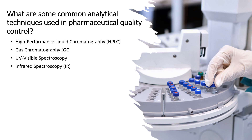Next is Infrared (IR) Spectroscopy, utilized for qualitative and quantitative analysis of pharmaceutical compounds based on their molecular vibrations. It is commonly used for identification of functional groups, characterization of polymorphs and detection of impurities. Next is Mass Spectrometry (MS), a powerful technique used for identification and characterization of pharmaceutical compounds based on their mass-to-charge ratio. It is employed for structural elucidation, identification of unknown compounds and detection of trace impurities.